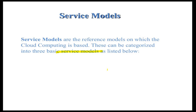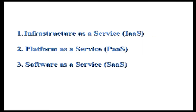The three service models are: Infrastructure as a Service (IaaS), Platform as a Service (PaaS), and Software as a Service (SaaS). First, you have to build up infrastructure, then you can design your platform.